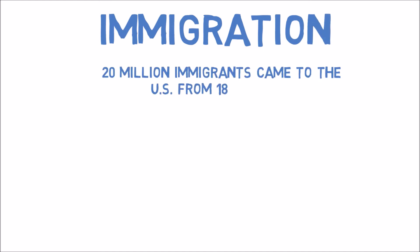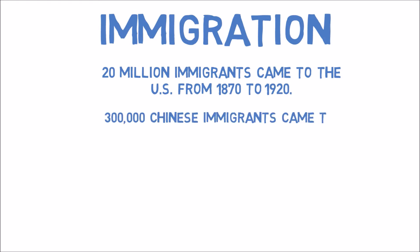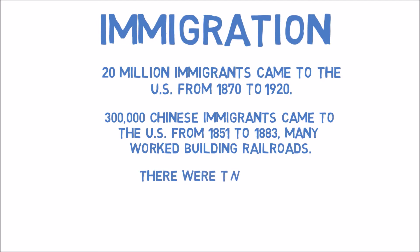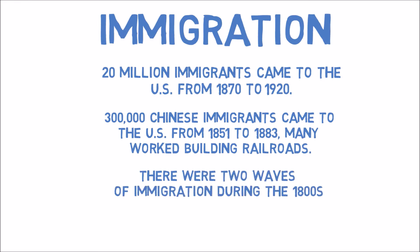Immigration. 20 million immigrants came to the U.S. from 1870 to 1920. 300,000 Chinese immigrants came to the U.S. from 1851 to 1883, and many worked building railroads. There were two waves of immigration during the 1800s with old and new immigrants.